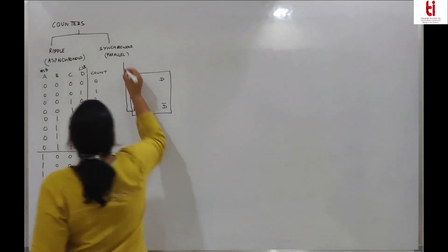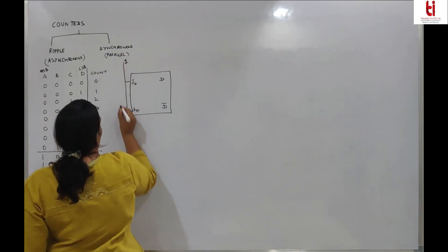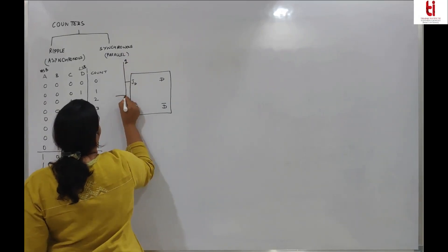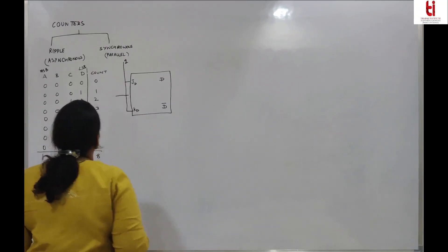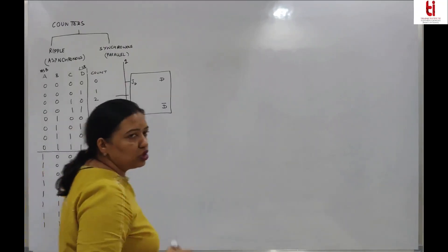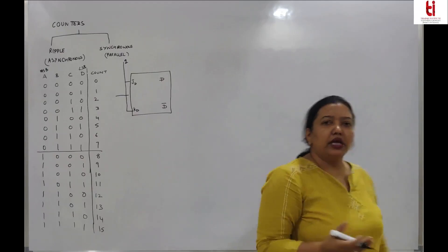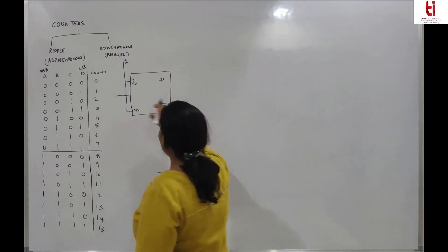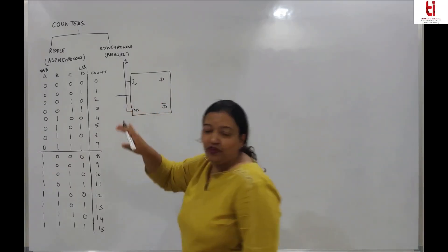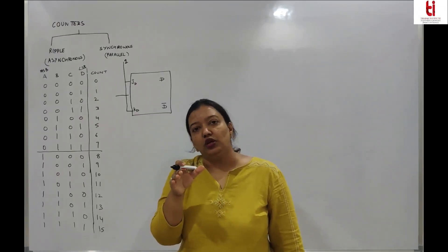When J and K are both 1, the flip-flop will toggle. We have to decide which clock edge to use — it can be negative edge triggered or positive edge triggered. But all the flip-flops should trigger on the same clock edge.